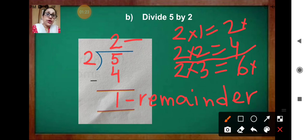Note down in your notebook. Divide five by two — we are getting the remainder one.